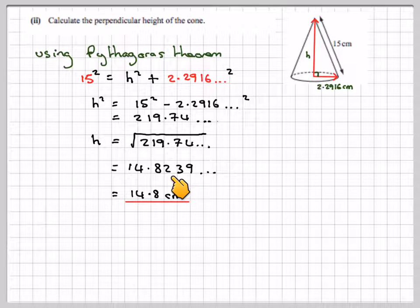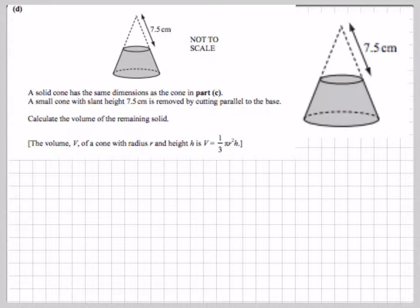Which is 14.8 centimetres. Again, remember to use this one if you're going to use it in the next part of the question. For the last part, a solid cone has the same dimensions as in part C, but the small cone has a slant height of 7.5. Notice that that's half of the original slant height, which is 15. This bit is then going to be removed.